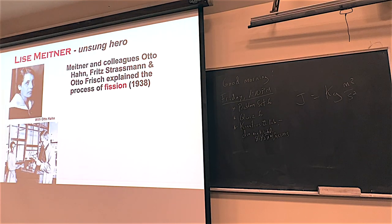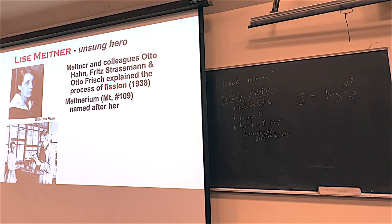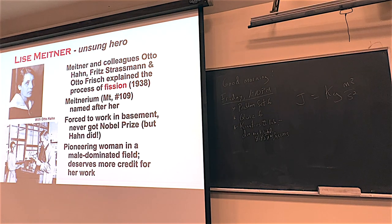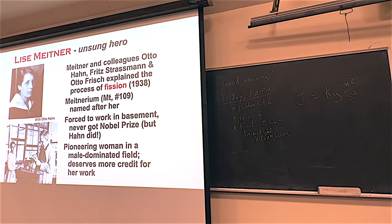One hero that hasn't been recognized enough is Lise Meitner. She, along with others, was one of the people who really elucidated fission and how it works in 1938, and an element was actually named after her. Just like Marie Curie, she was forced to work in a basement and never received a Nobel Prize, though Otto Hahn did. Lise Meitner was a pacifist — she wouldn't take sides against Nazi Germany or the Allies. She really does deserve a lot more respect and recognition. Element 109 — she's cool.